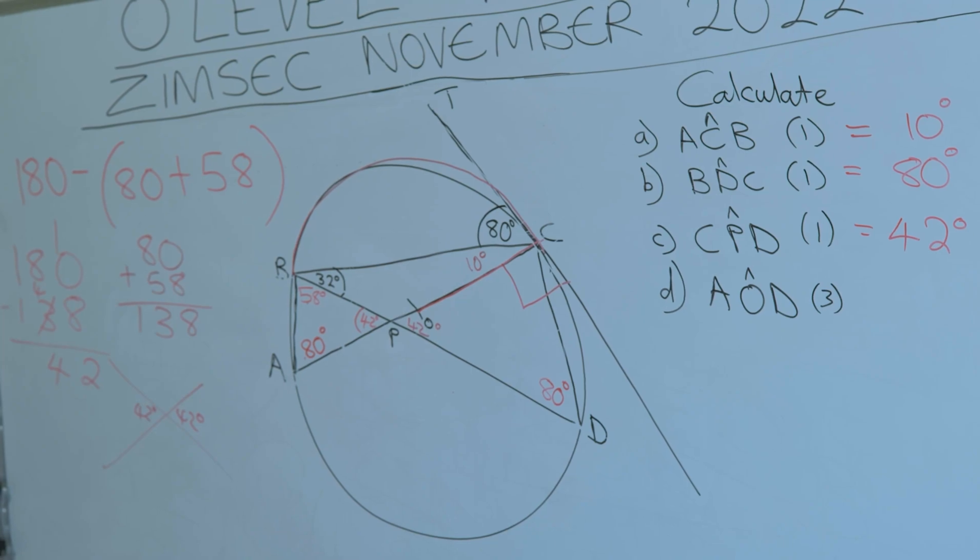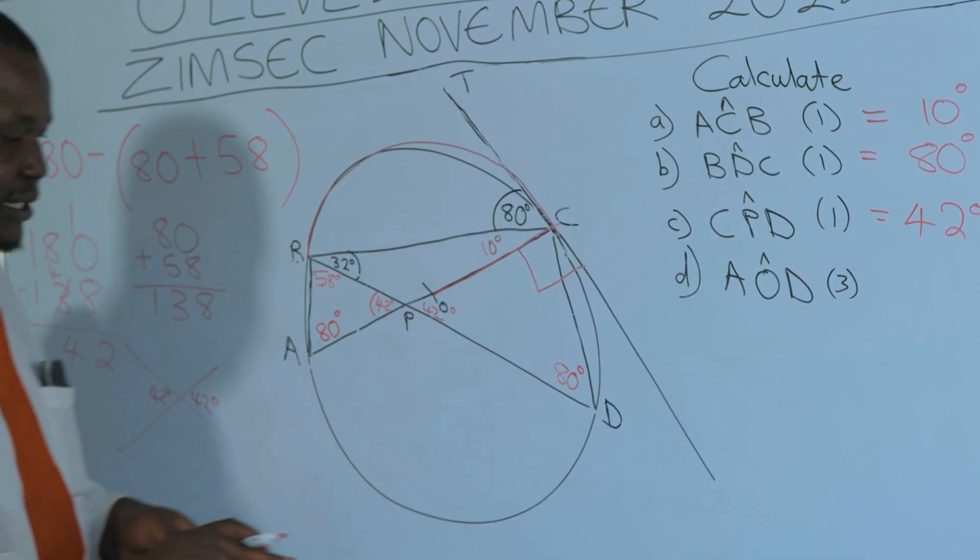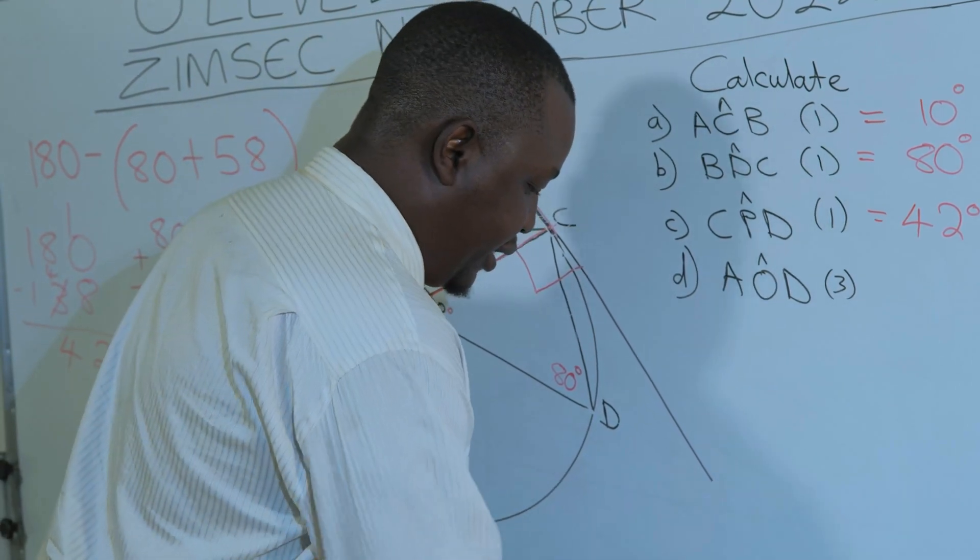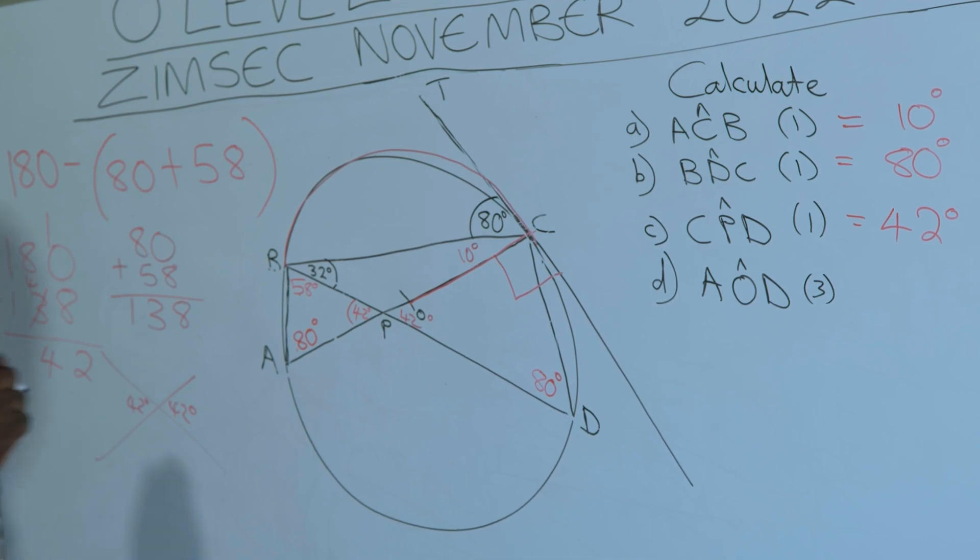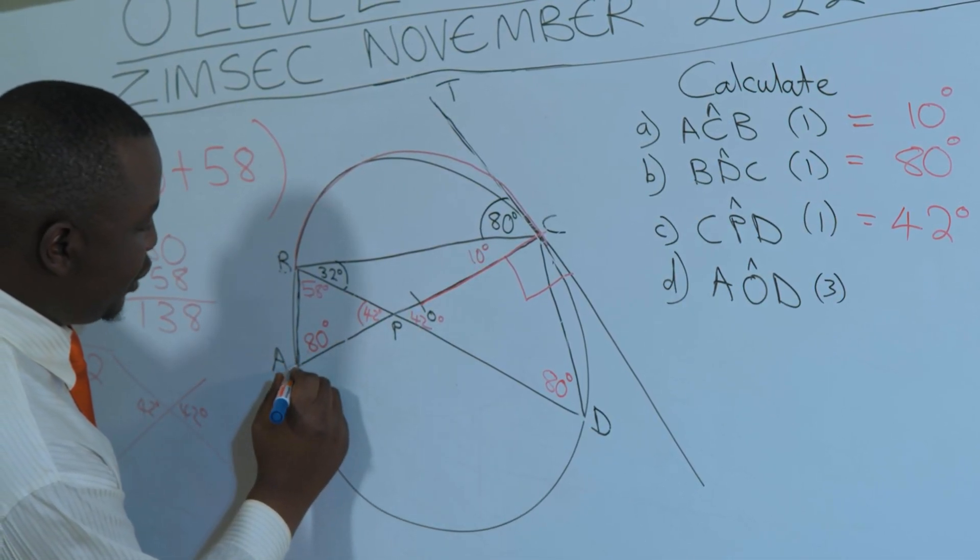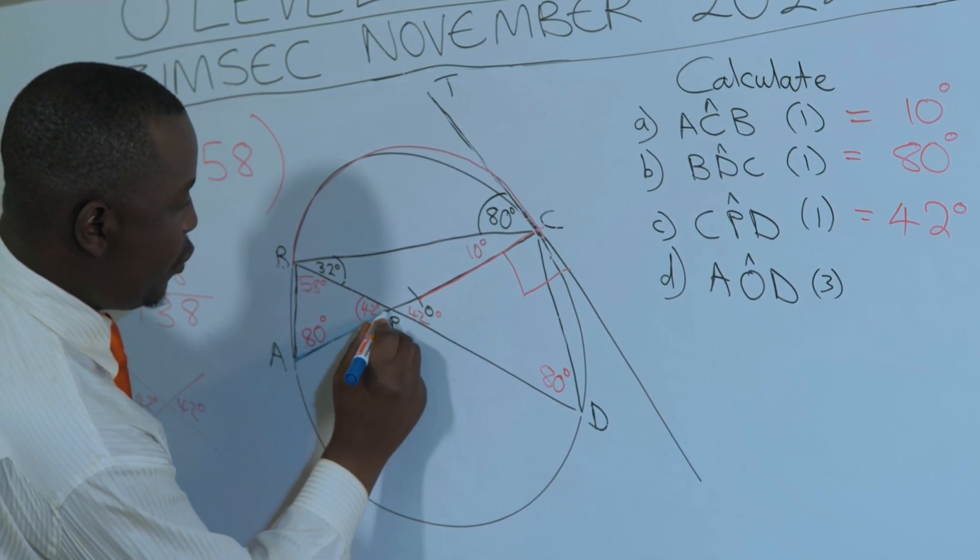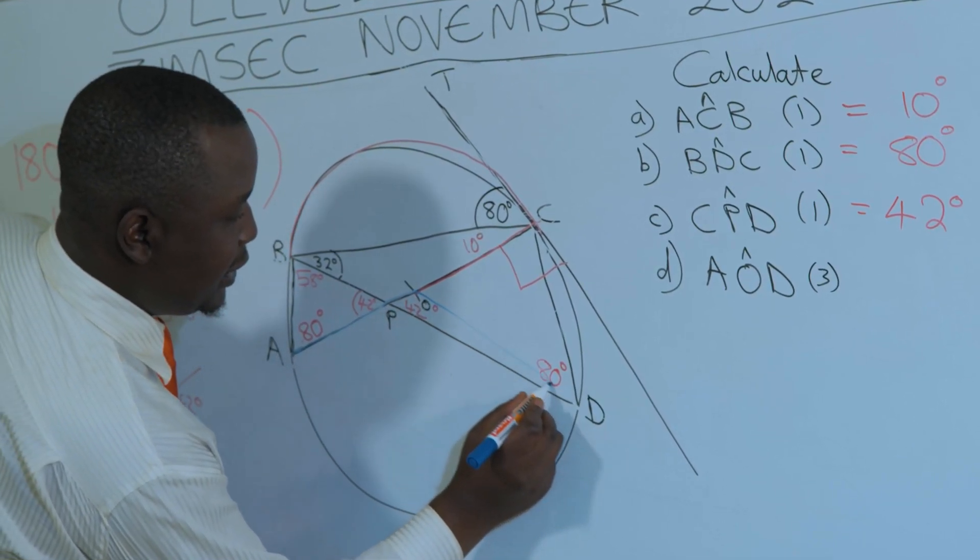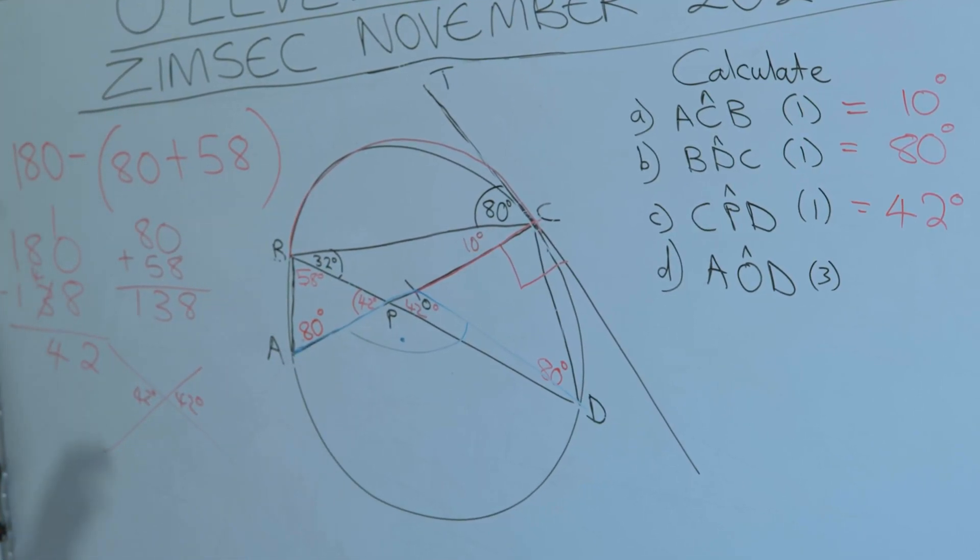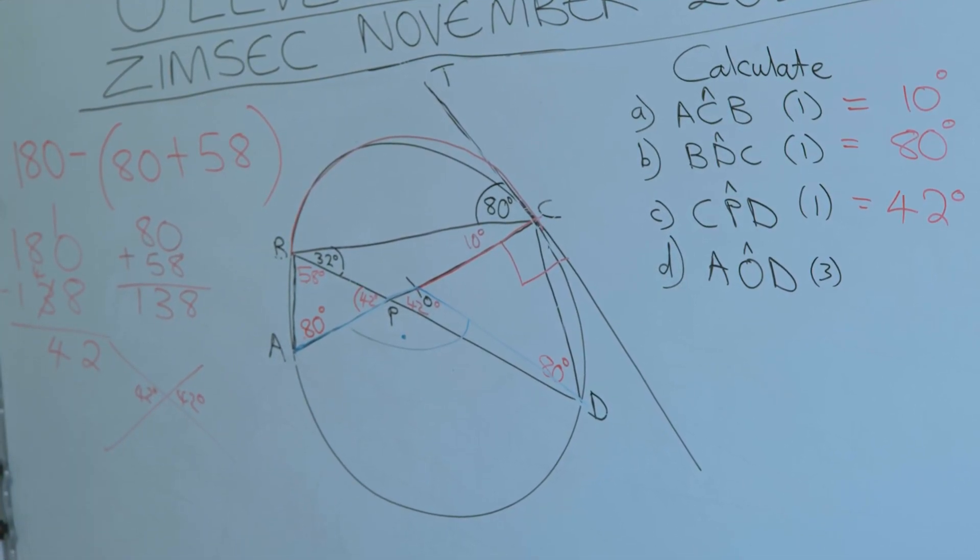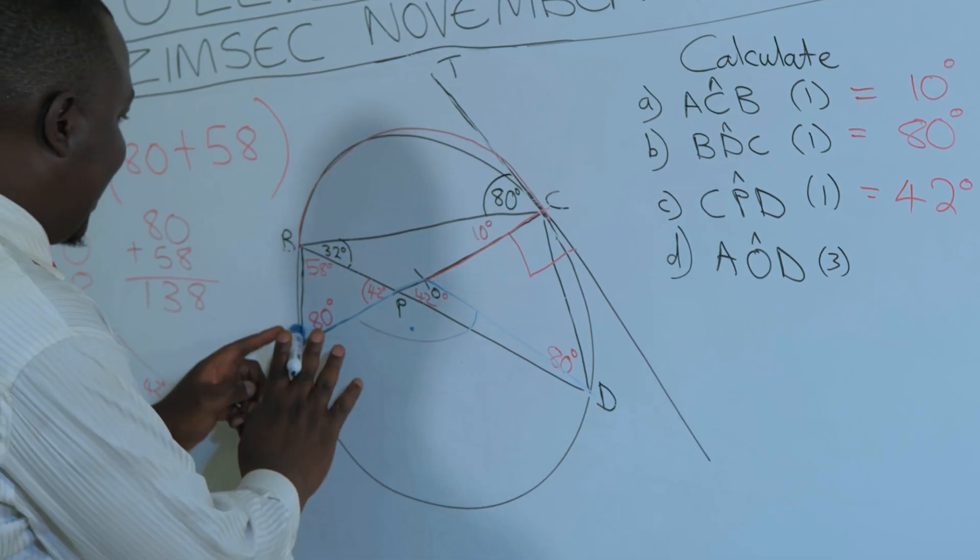Angle AOD, let me try to use the blue font so that it becomes crystal clear to you. Angle AOD, what we are talking about here is that angle AOD. They are talking about this angle here. And this is an angle that is being subtended at the center by arc AD.